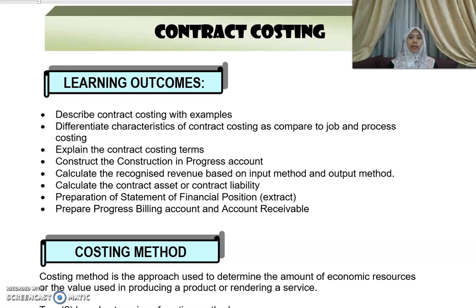At the end of this chapter, you should be able to describe contract costing with examples. You need to be able to differentiate the characteristics of contract costing compared to job or process costing. You need to be able to explain the contract costing terms, construct the construction in progress account, and calculate the recognized revenue based on two methods — the input method and the output method.